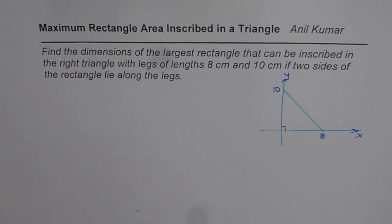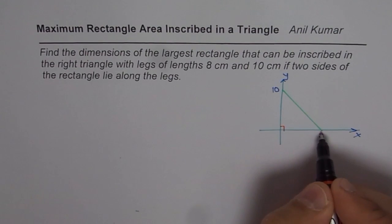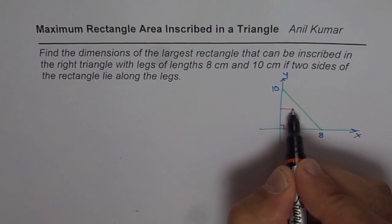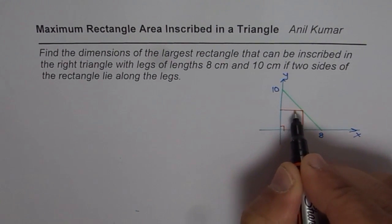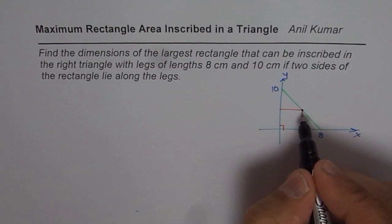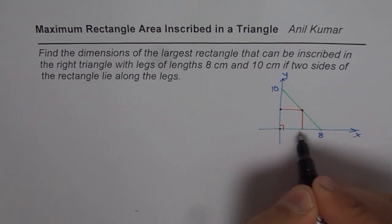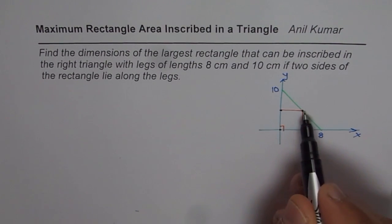The idea is to somehow relate the variables. We have two variables, x and y, for our rectangle, and the rectangle is inside the triangle. All four corners of the rectangle should be on the sides of the triangle so that it can be inscribed inside it.